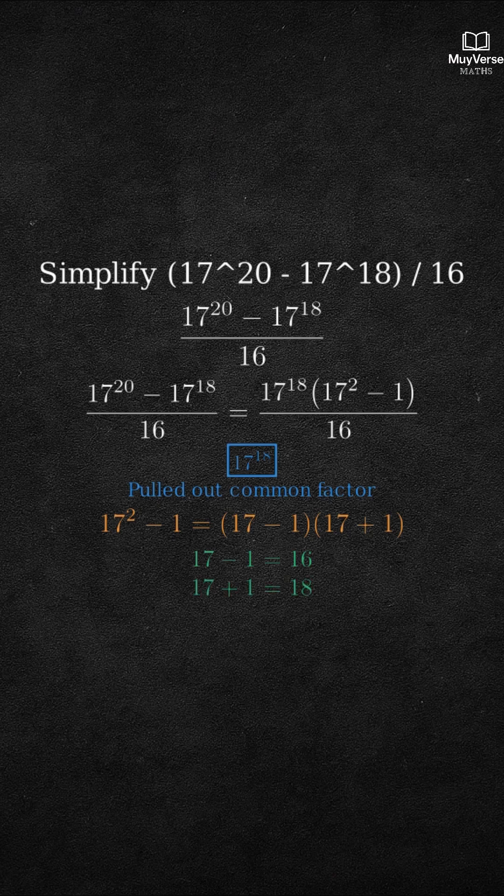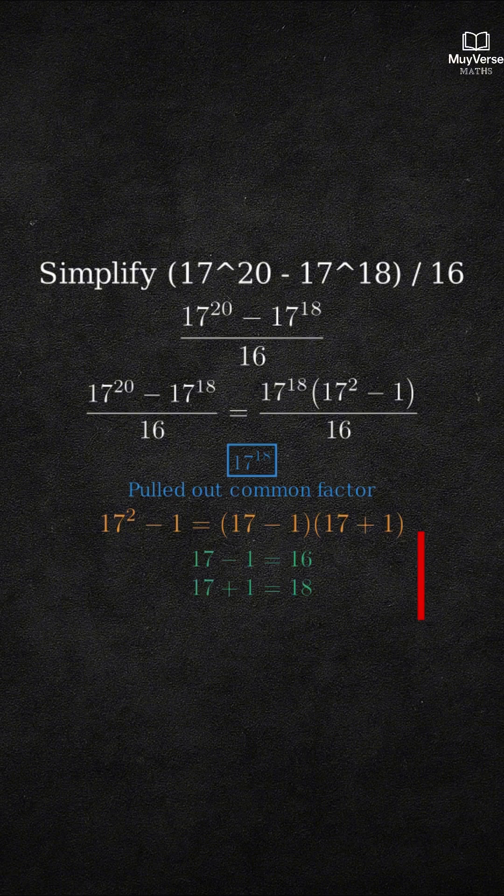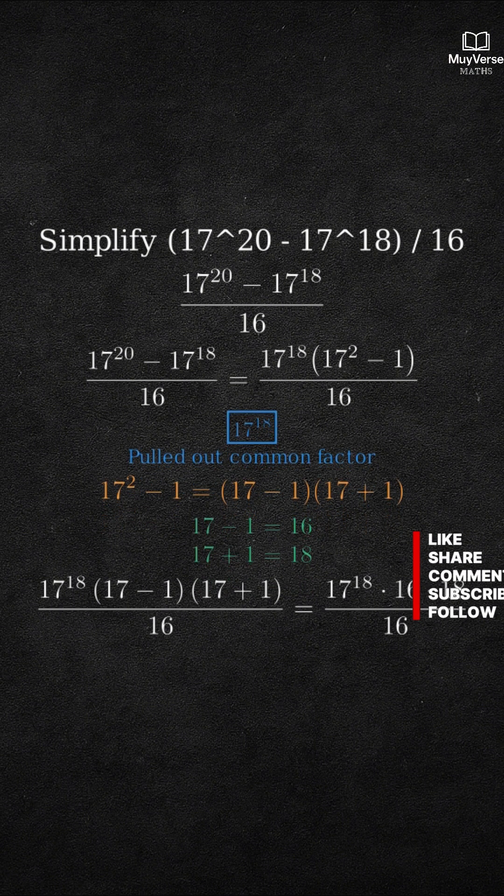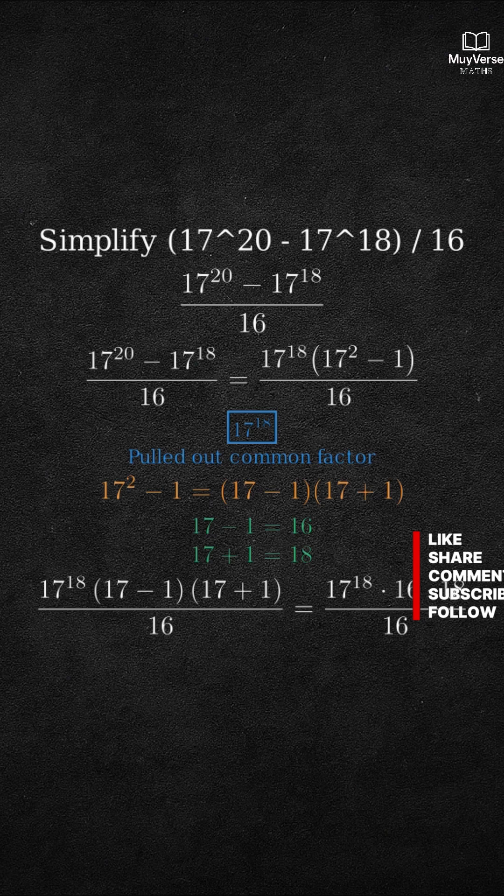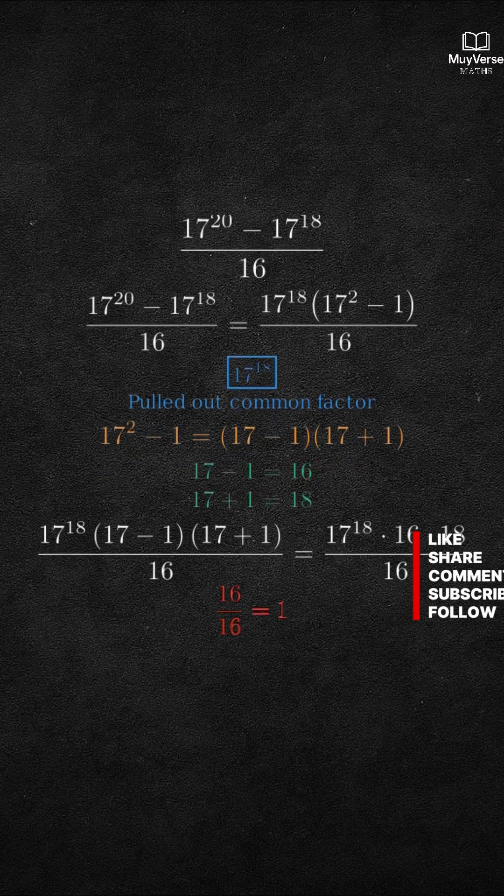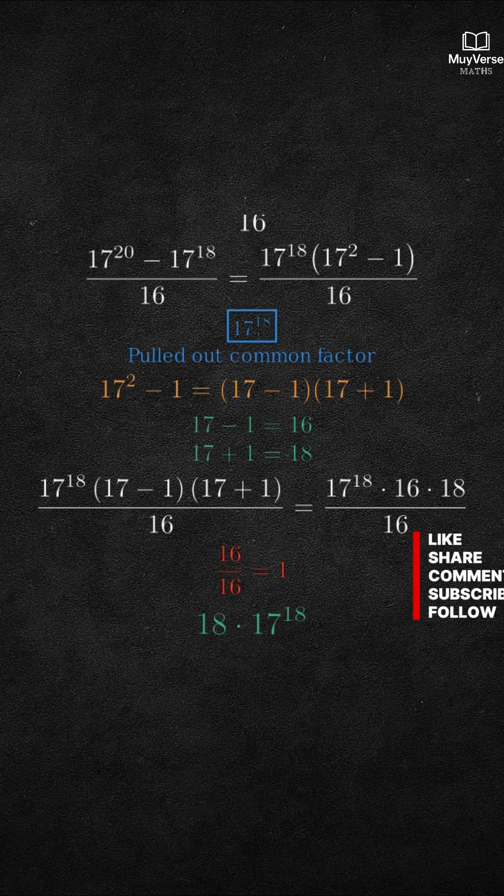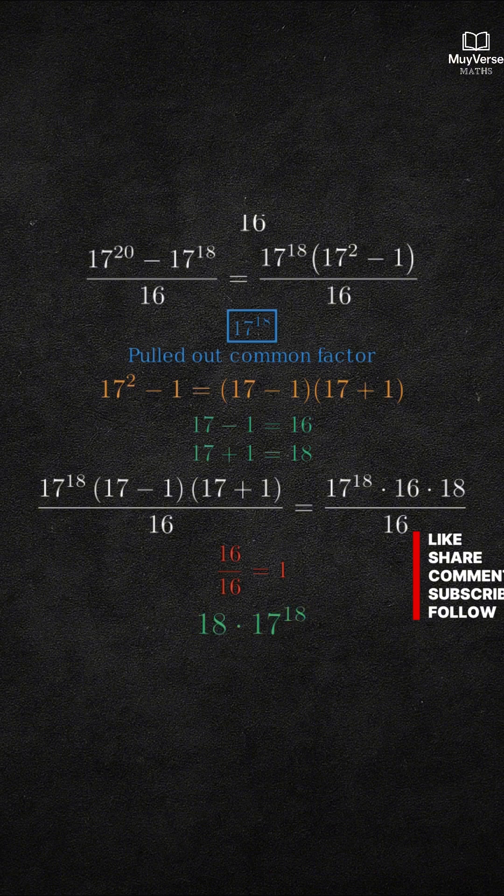Step 3. Substitute the factors into the fraction. We have 17 to the 18th power times 16 times 18 all over 16. The 16s form a 16 over 16 which equals 1. So they cancel. We are left with 18 times 17 to the 18th power.